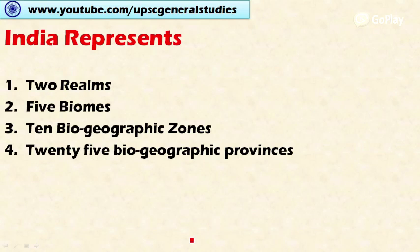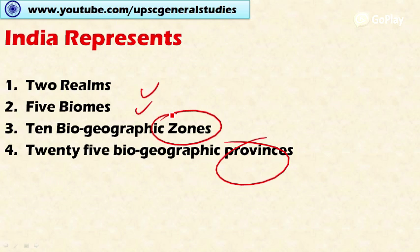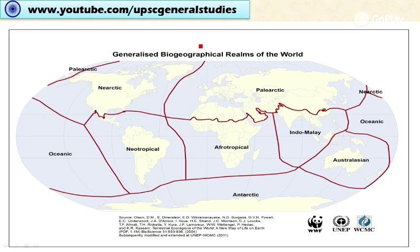India can be divided biogeographically into two realms, five biomes, ten biological zones, and 25 biogeographical provinces. A realm is a large spatial region within which ecosystems share a similar biota, and the animal and plant species share a similar evolutionary history within these realms.